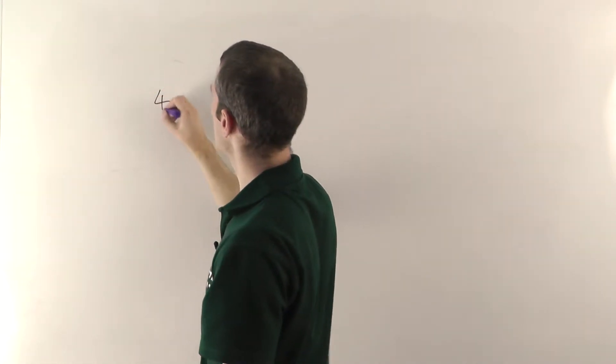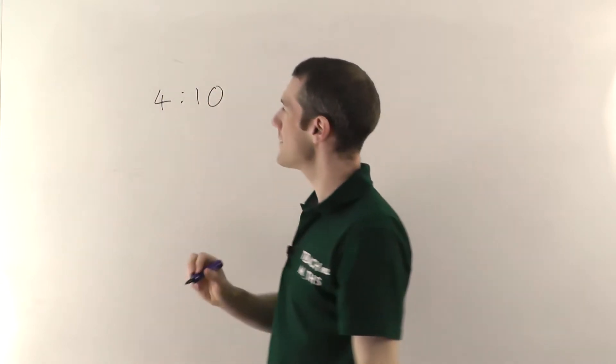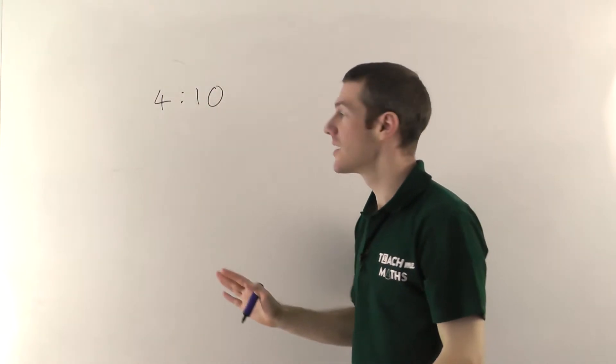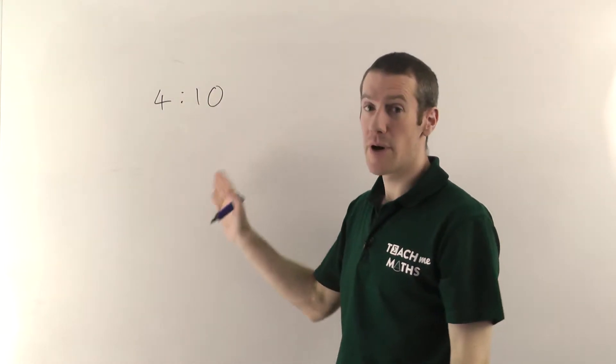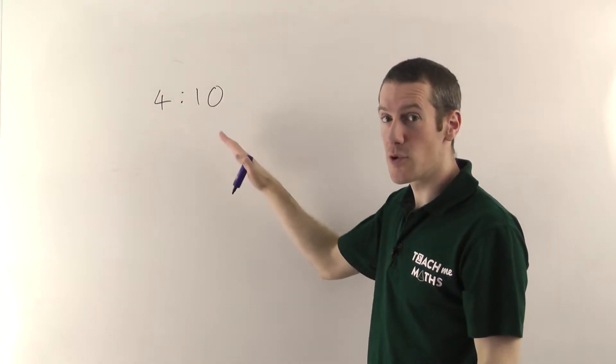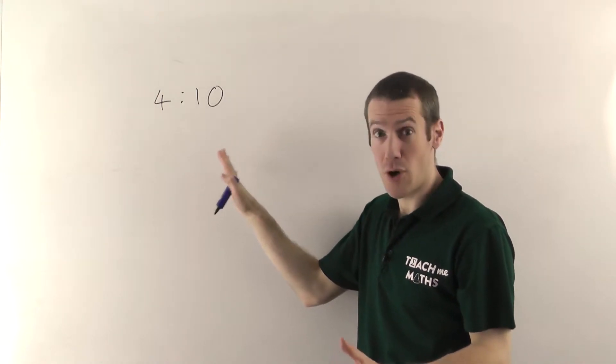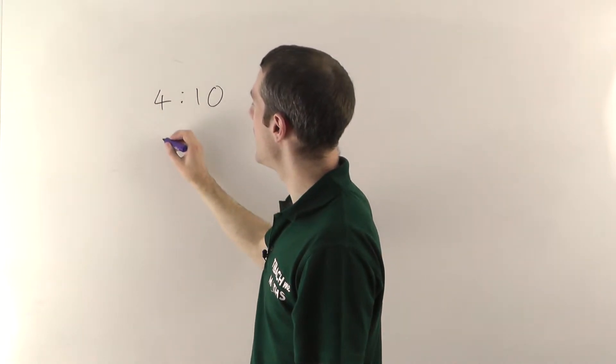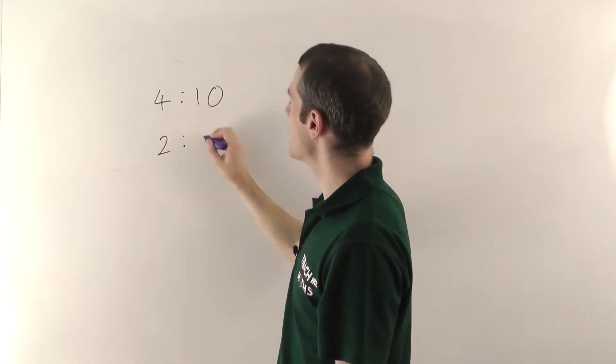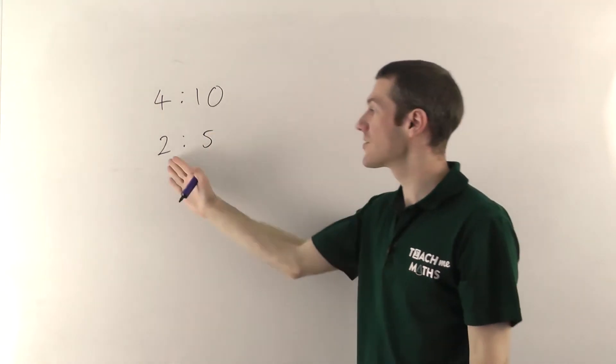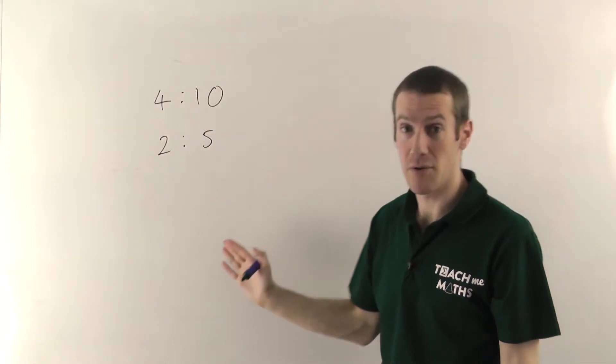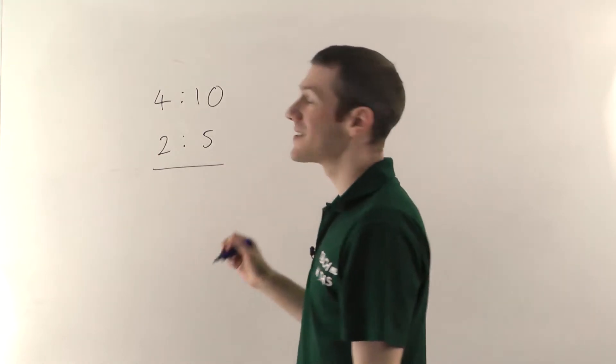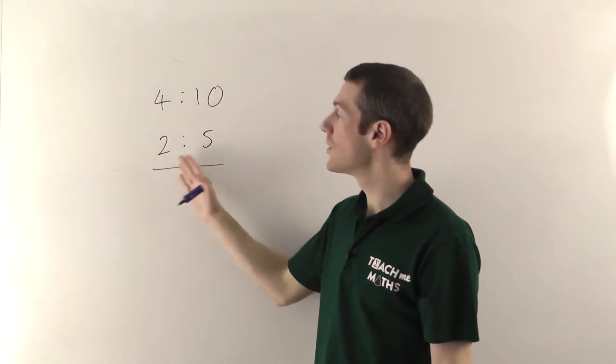So if we had a ratio like four to ten and we have to simplify it, you're just looking for a number that divides into both of these to make the numbers as small as possible while still keeping them whole numbers. So these are both even. So we divide them both by two. So half of four is two. Half of ten is five. And then ask yourself does anything else go into two and five? No. So that will be the simplified ratio. It's two to five.